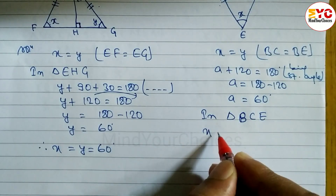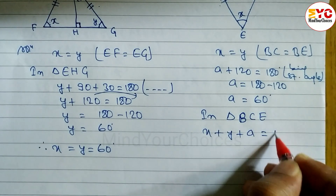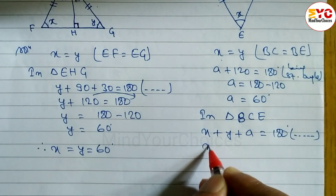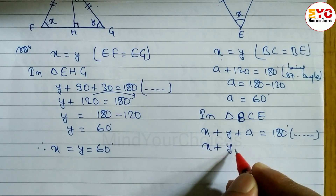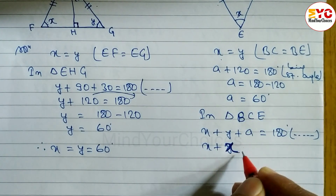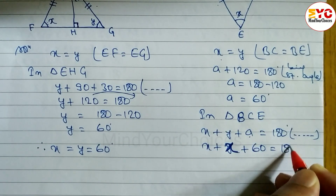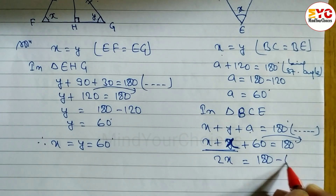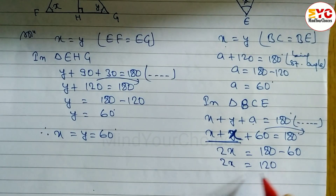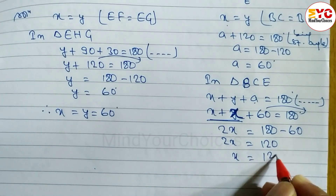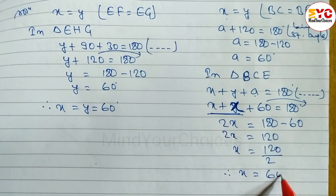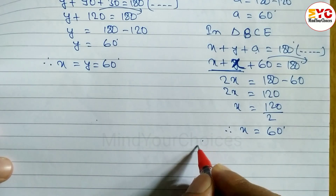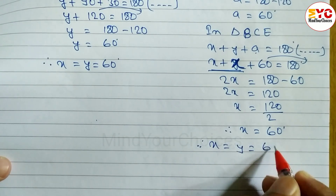A plus x plus y is equal to 180 degrees — reason: the sum of angles of the triangle. Since x is equal to y, we substitute: x plus x plus 60 is equal to 180 degrees. When you add both x terms we get 2x plus 60 is equal to 180. So 2x is equal to 180 minus 60, giving 2x equal to 120 degrees. Therefore x is equal to 120 divided by 2, so x is equal to 60 degrees. Since x and y are equal, x is equal to y is equal to 60 degrees.